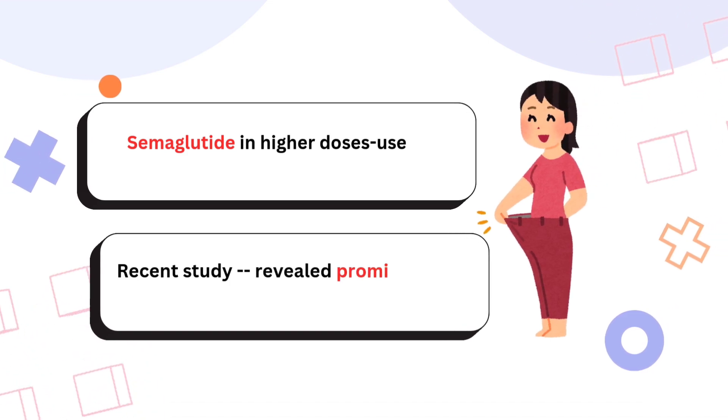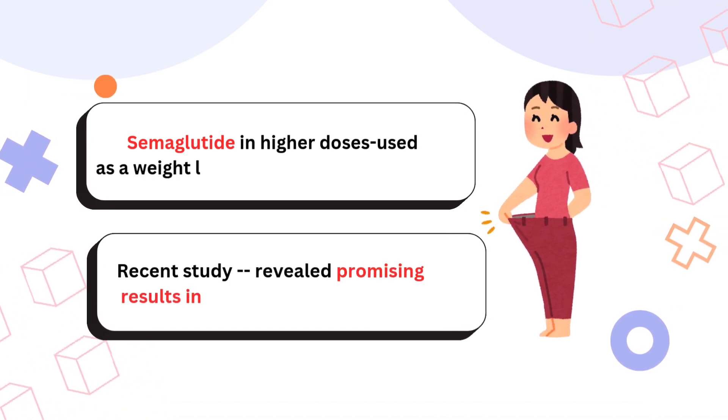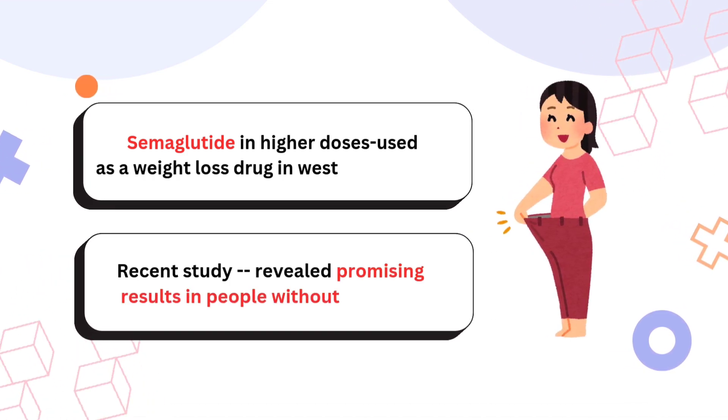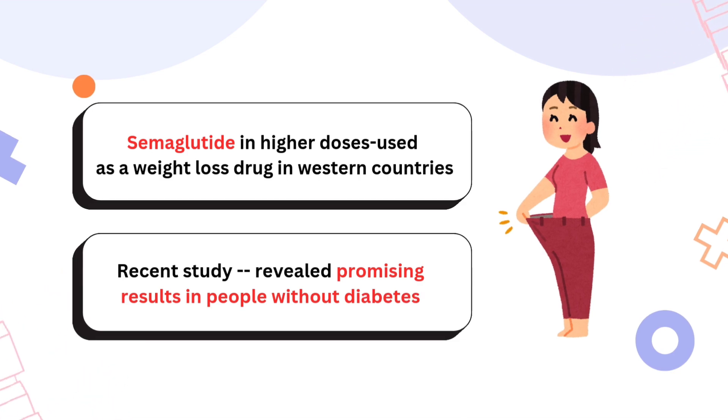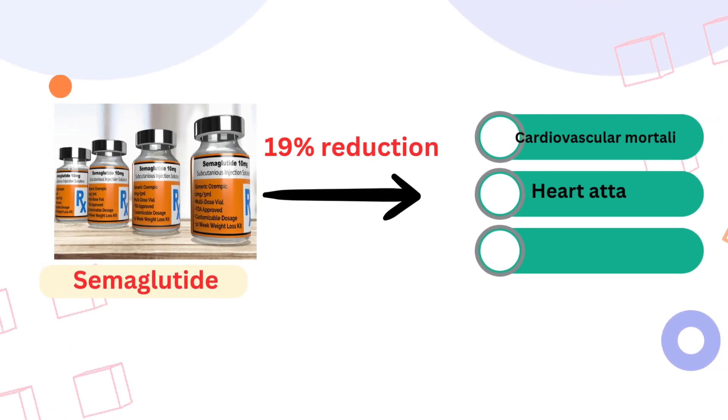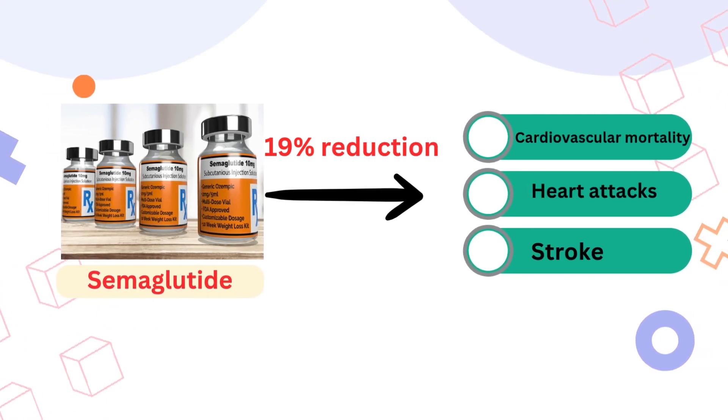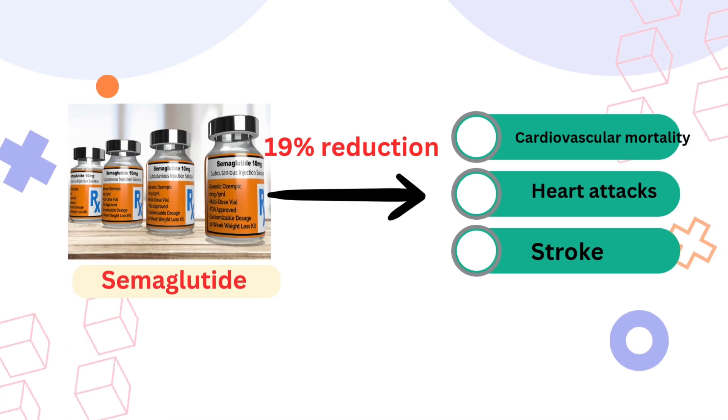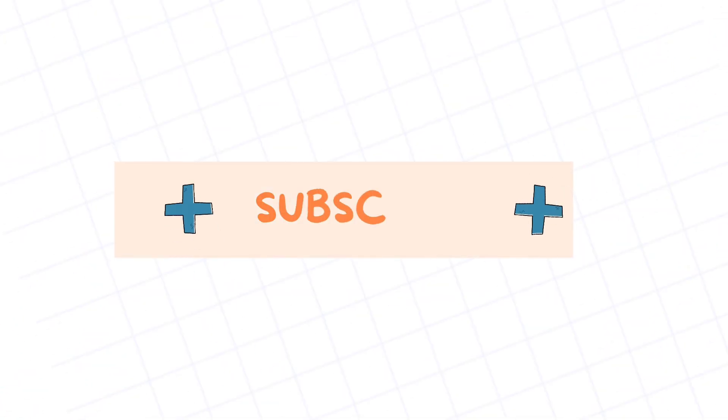Semaglutide in higher doses is used as a weight loss drug in western countries and in a recent study it was revealed that there was promising results in people without diabetes. Semaglutide was found to reduce by 19% the cardiovascular mortality, heart attacks and stroke.